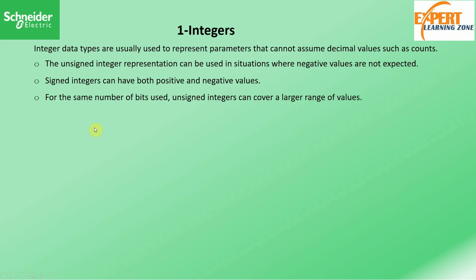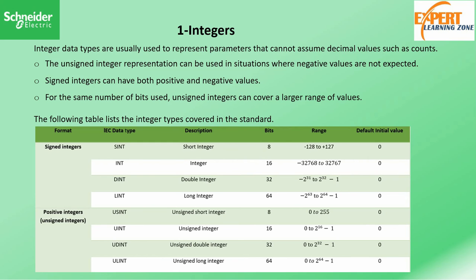We will start with integers. Integer data types are used to represent parameters that cannot assume decimal values, such as counts. The unsigned integer representation is used in situations where negative values are not expected, while signed integers can be both positive and negative. For the same number of bits used, an unsigned integer can assume a wider range than a signed integer. The table below summarizes this: for signed integers we have short integer (SINT) with 8 bits.